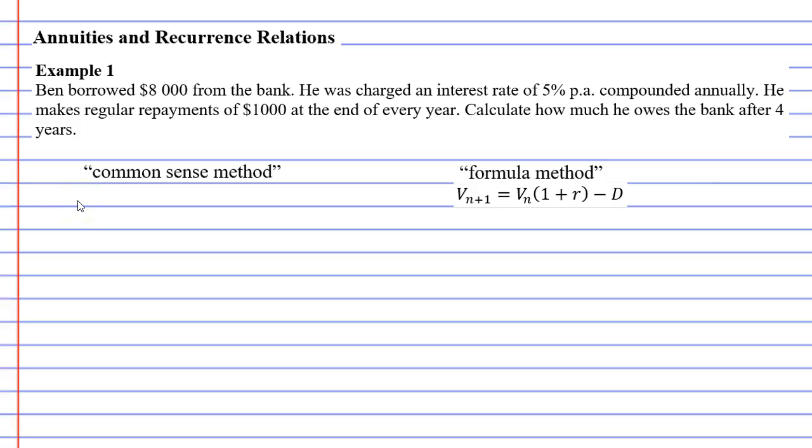In this video, we're going to complete example one. It says, Ben borrowed $8,000 from the bank. He was charged an interest rate of 5% per annum, compounded annually. And he makes regular repayments of $1,000 at the end of every year.